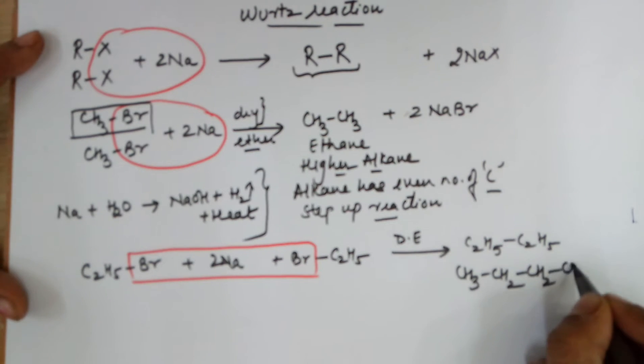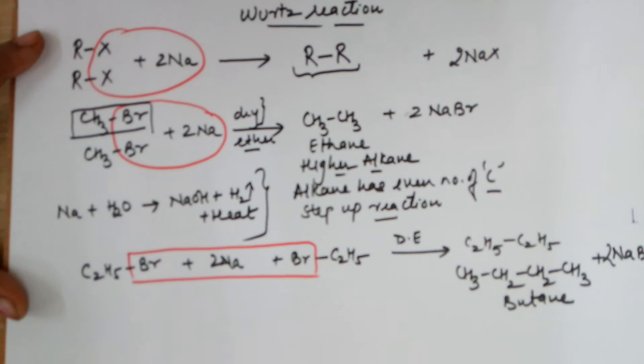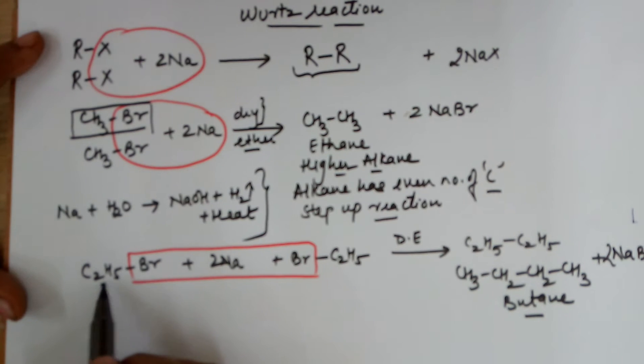a butane molecule. Of course the byproducts in this case would be 2 NaBr molecules. So you end up in a butane if you start with ethyl bromide.